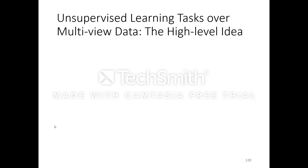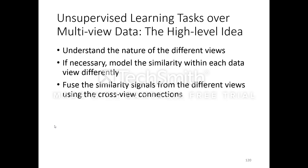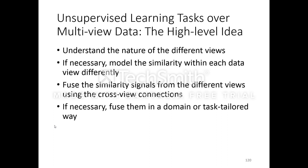The high-level idea is to understand the nature of different views and model similarity within each differently. For a time-series view, you might use dynamic time warping; for a textual view, you might use document embeddings. You then fuse the similarity signals across views using cross-view connections, possibly in a domain-tuned way — for example, if one view is known to be more reliable, you prioritize it in cases of serious conflict.